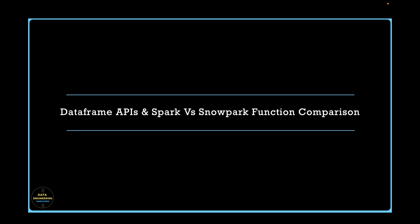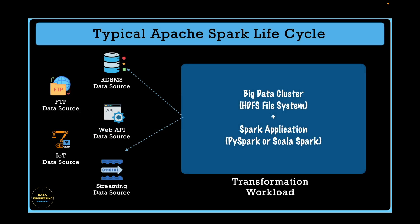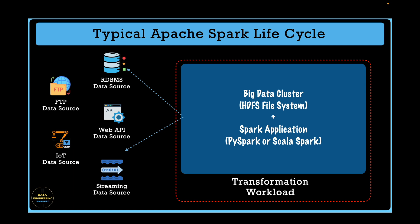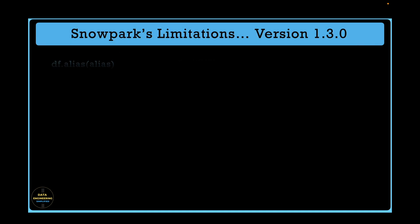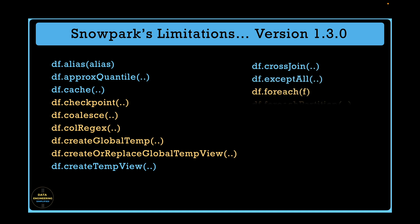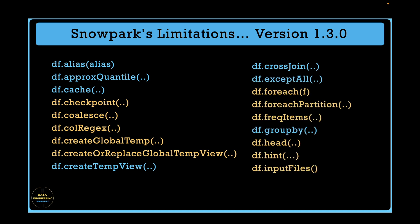After data is loaded via the Reader API, the next step in the Apache Spark lifecycle is to use the DataFrame API and perform different data manipulation and transformation operations. Spark's DataFrame API has around 100-plus functions, and if you compare it with Snowpark's DataFrame, the majority have similar structure and signature to minimize migration effort from Apache Spark to Snowpark. However, there are differences. Here is a list of DataFrame operations that either need restructuring in their signature, are not at all supported, or are named differently in Snowpark. All DataFrame operations marked in yellow in this list are not supported in Snowpark version 1.3.0.